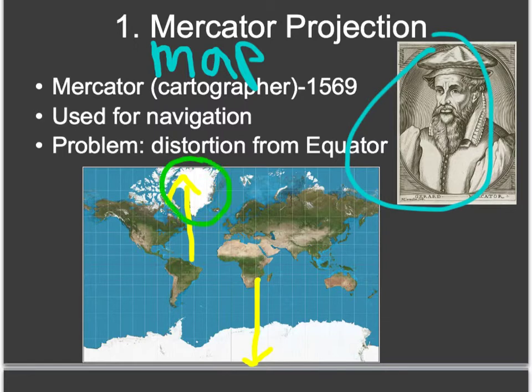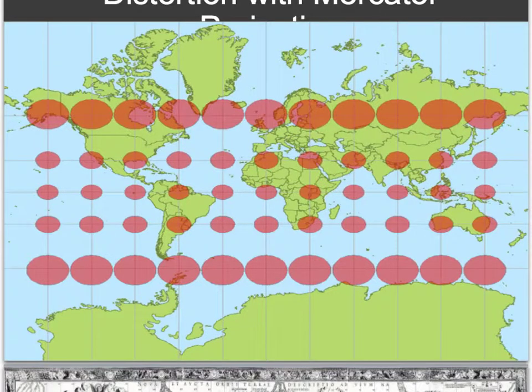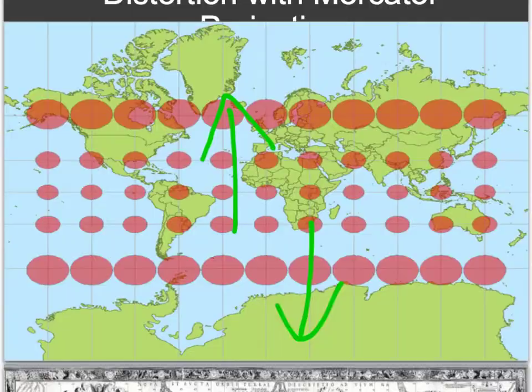For instance, Greenland looks as big as Africa, which it really isn't, and Antarctica looks absolutely huge. There is distortion — as you get further and further from the equator, the land masses look larger than they actually are. Greenland takes as much area as Africa on the map, when in fact Africa is approximately 14 times greater than Greenland. Alaska takes as much area as Brazil on the map, when in fact Brazil's area is more than five times Alaska. As you go further and further from the equator, the distortion is going to become greater.